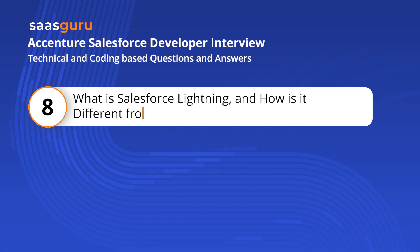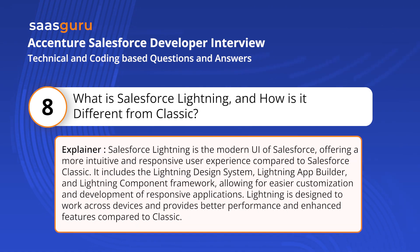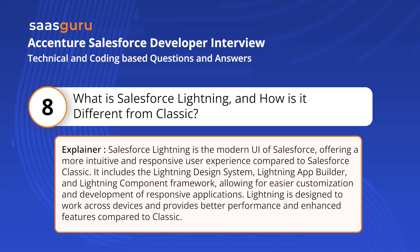Question 8: What is Salesforce Lightning and how is it different from Classic? Salesforce Lightning is the modern UI of Salesforce, offering a more intuitive and responsive user experience compared to Salesforce Classic. It includes the Lightning Design System, Lightning App Builder, and Lightning Component Framework, allowing for easier customization and development of responsive applications. Lightning is designed to work across devices and provides better performance and enhanced features compared to Classic.